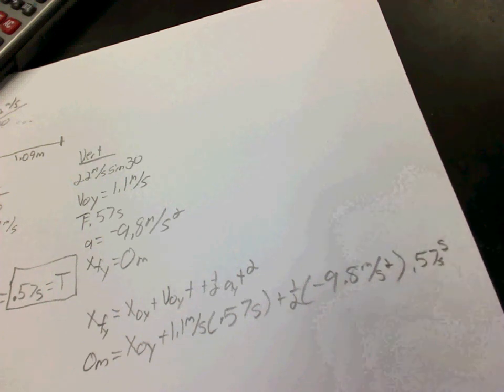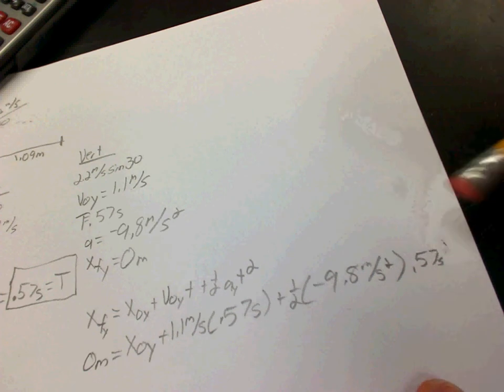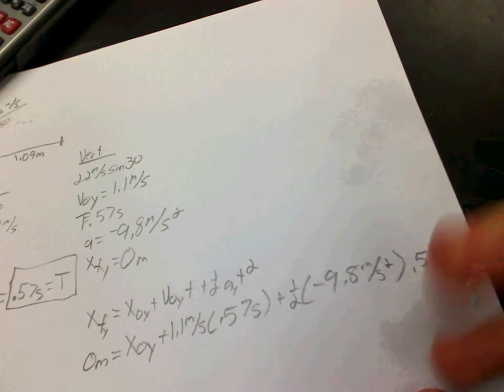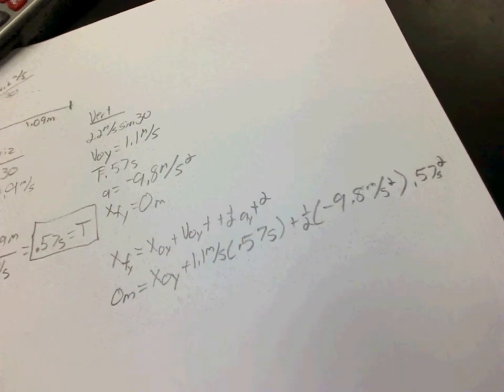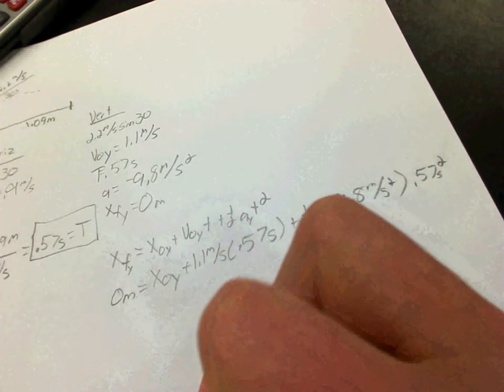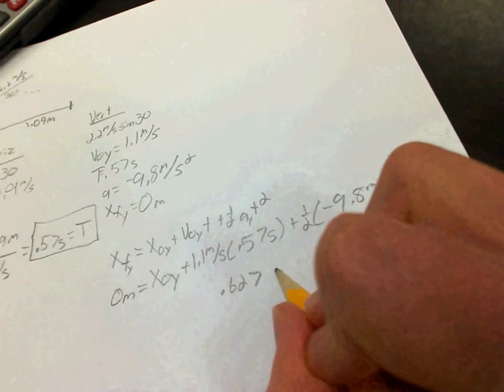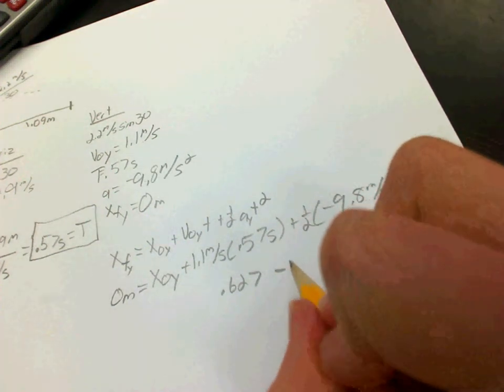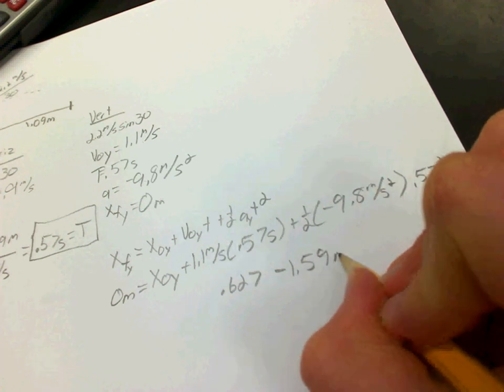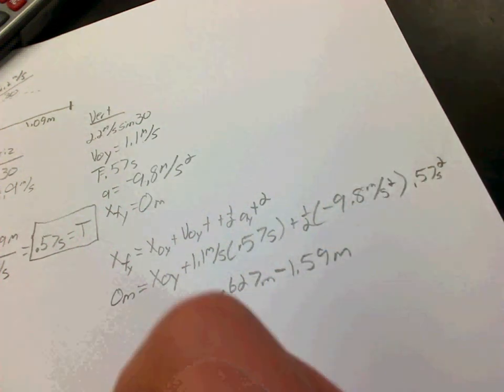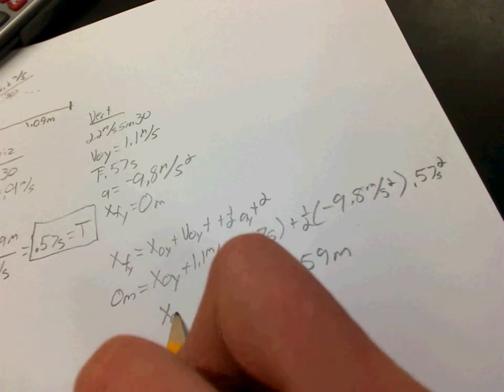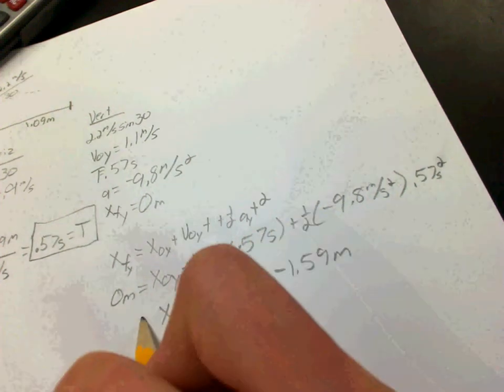Just erase that. There you go. Throw that into your calculator. And what you're going to end up with is 1.1 times 0.57 is 0.627. Multiplying this out, you get minus 1.59. Make sure that you have your units everywhere. And then, of course, equals zero.